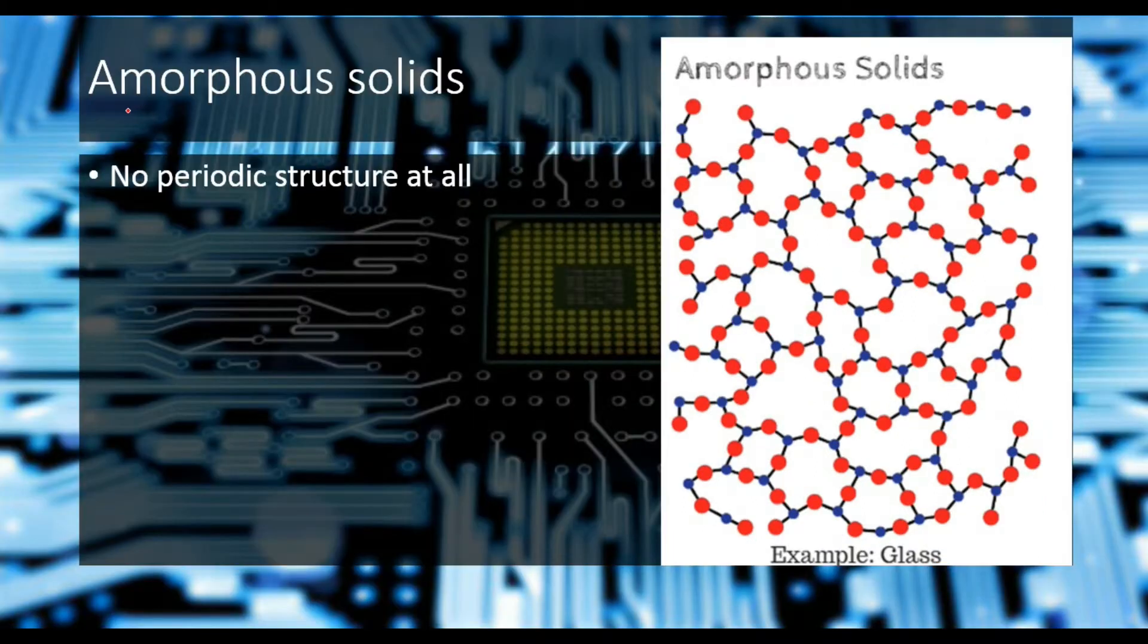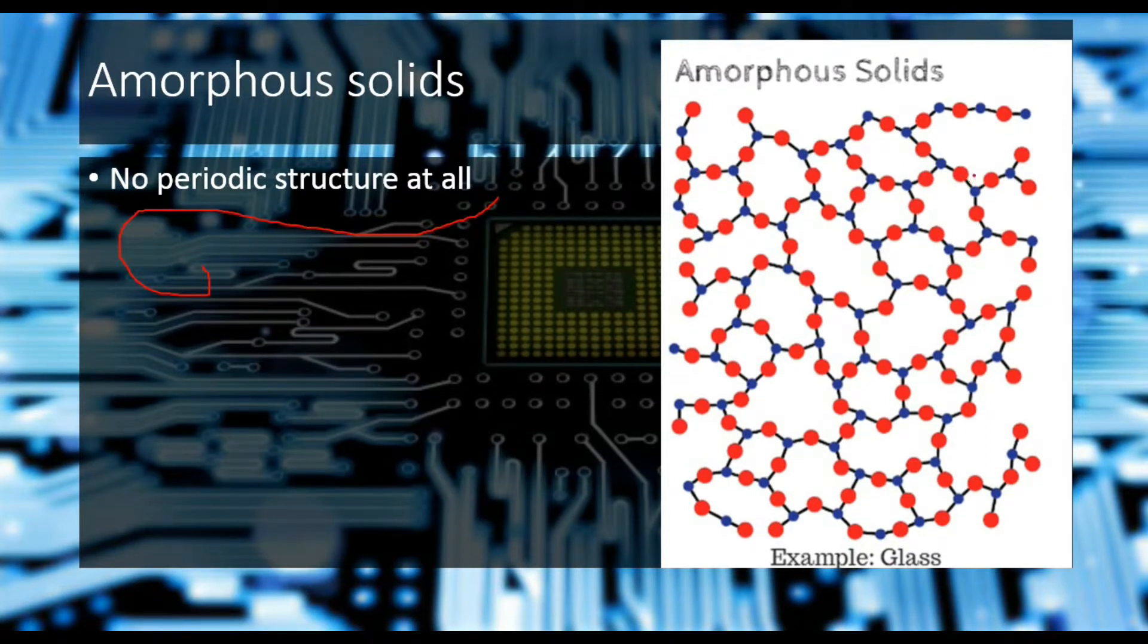Let's discuss amorphous solids. As I told you, there is no periodic structure at all. The atoms are arranged in a very hazy manner.